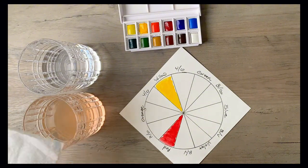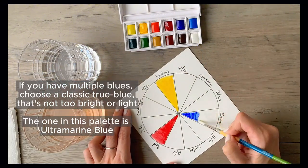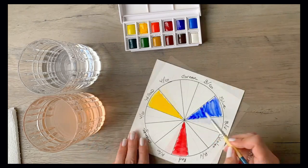Now we're going to do the blue. So first rinse out your brushes and then you'll start painting the blue into its own wedge and then you'll have all the primary colors done.